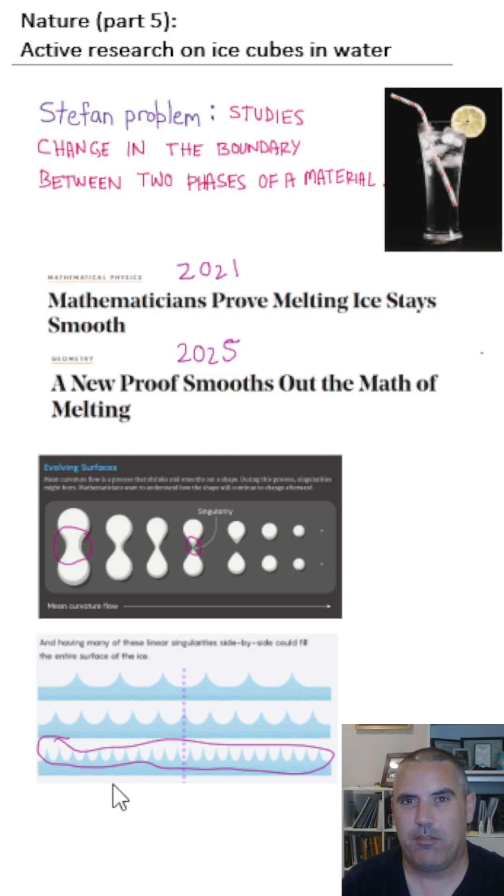Could it be possible that after your ice has been melting for a while you reach in and pull out a piece of ice and it's sharp? How can we prove that's not going to happen? That's where the research has gone, and there's been some progress made.